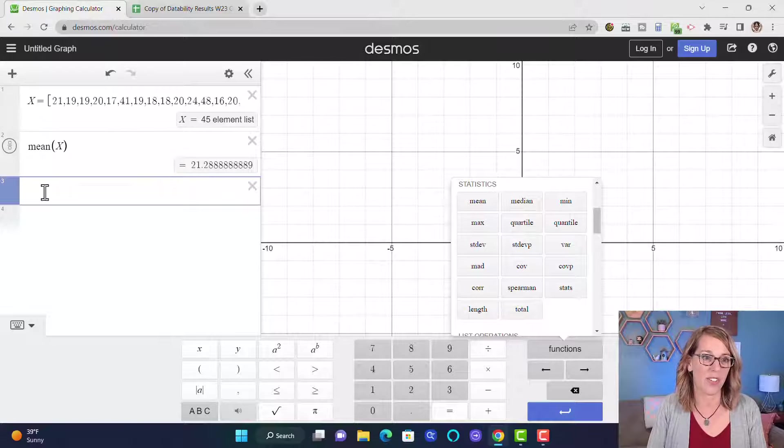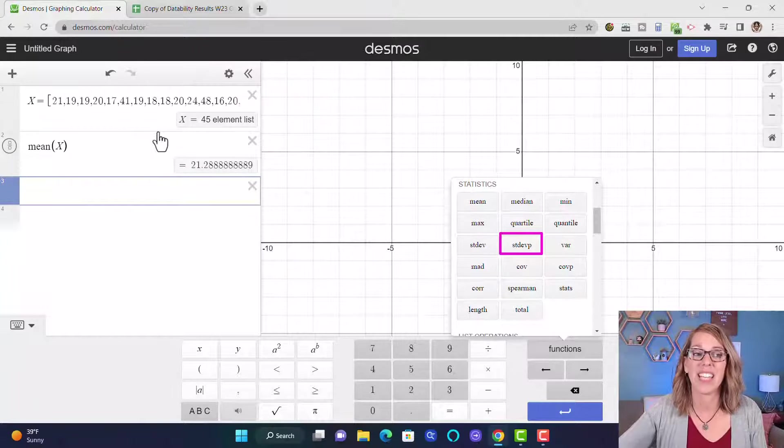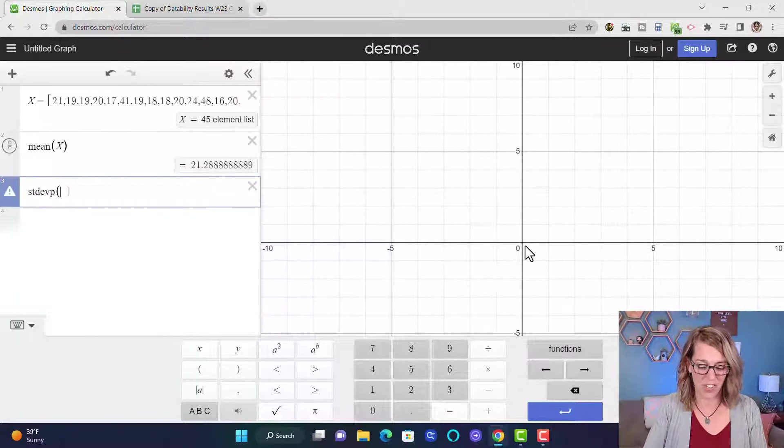Let's go ahead and do another measure of our data here. Let's do the standard deviation. So if I do S-T-D-E-V and then X I can do it that way, or I can go ahead and in an empty cell I can grab my standard deviation.